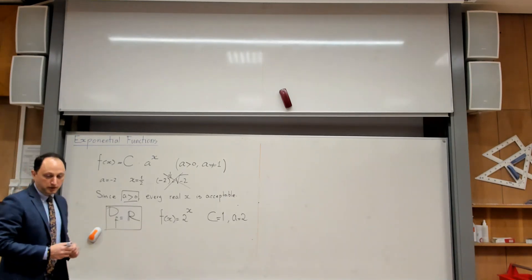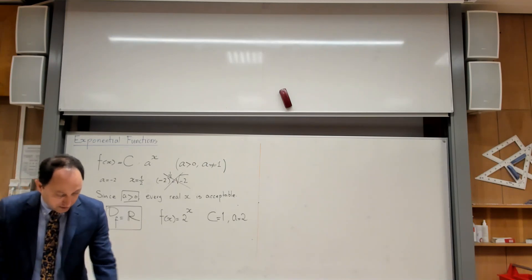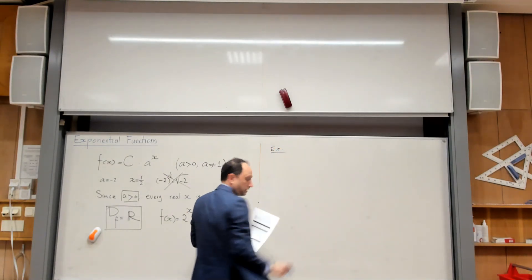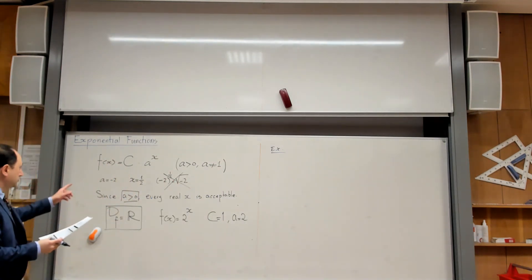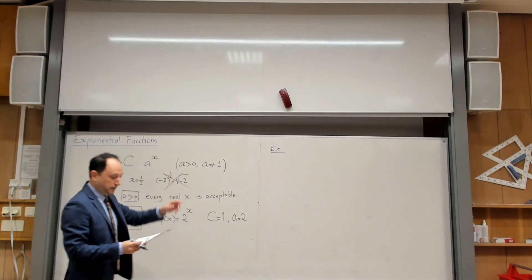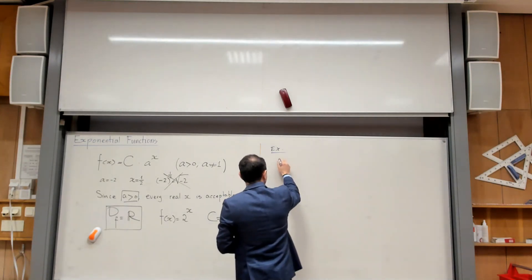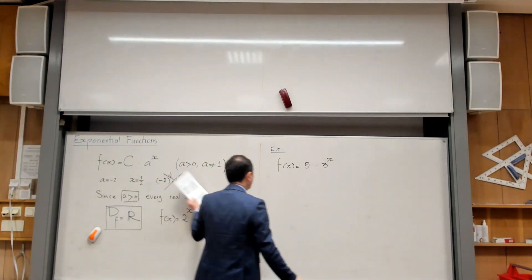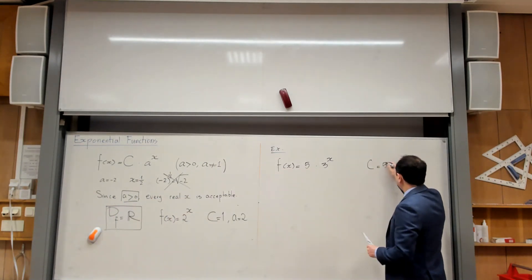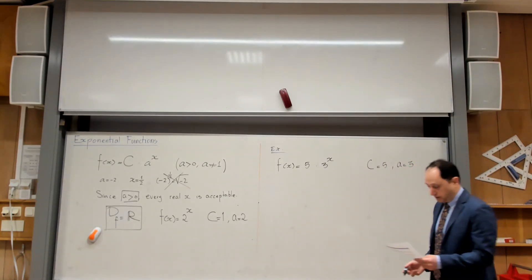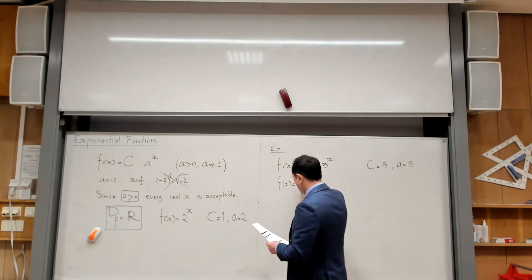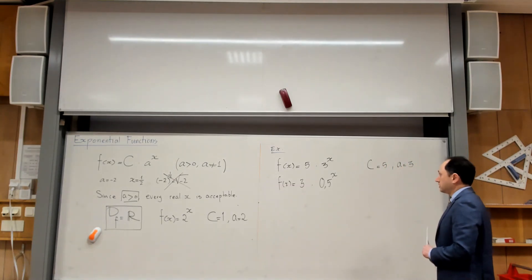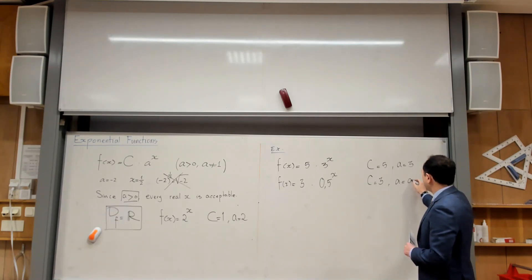Let me give you some examples. For instance, f of x equals 5 times 3 to the power x — that's an exponential function where c is 5 and a is 3. Or, f of x equals 3 times 0.5 to the power x — that's also an exponential function where c is 3 and a is 0.5.